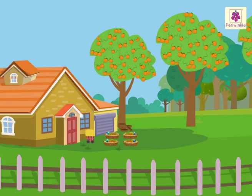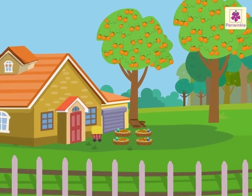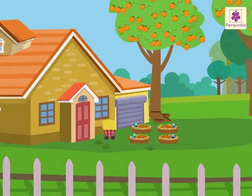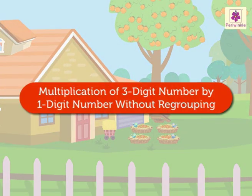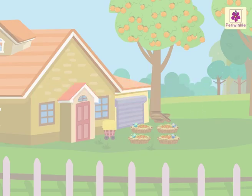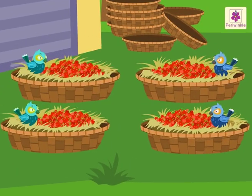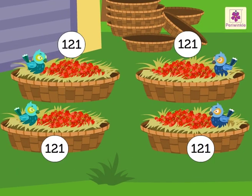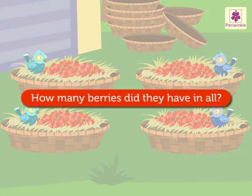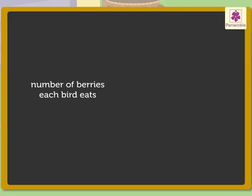It's holiday time! Let's visit the farmhouse — it will be fun learning multiplication of a three-digit number by a one-digit number without regrouping. At the farmhouse, look at those four colorful birds. Each of them had 121 berries. How many berries did they have in all?